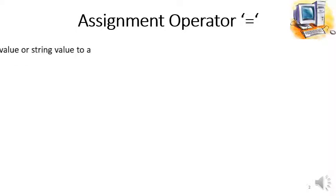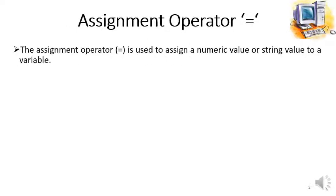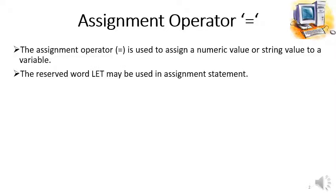First, the assignment operator. The equal to sign that we use in mathematics, in programming it is called the assignment operator because it is used to assign a value to a variable. The assignment operator is used to assign a numeric value or string value to a variable. The reserved word 'let' may be used with the assignment operator when declaring a variable.